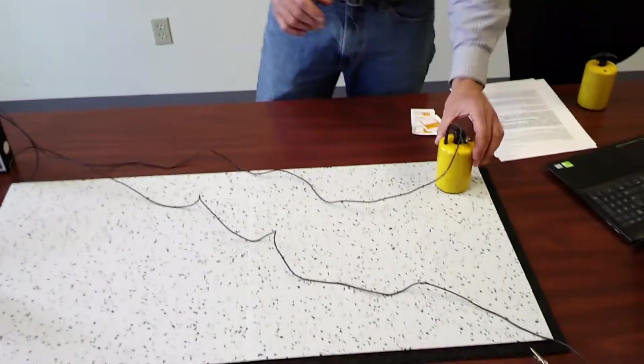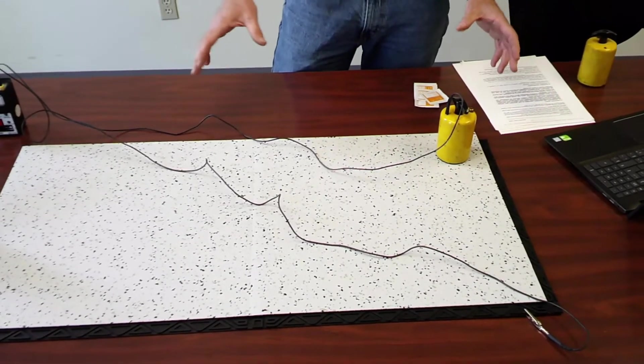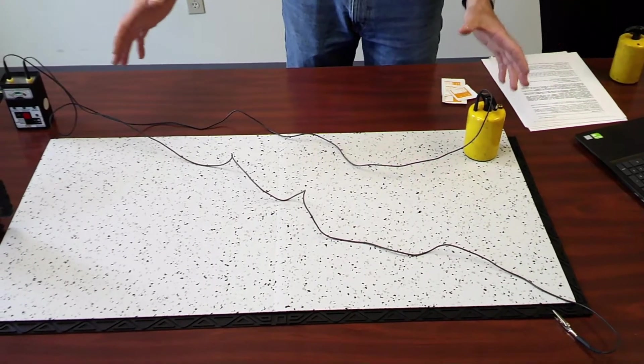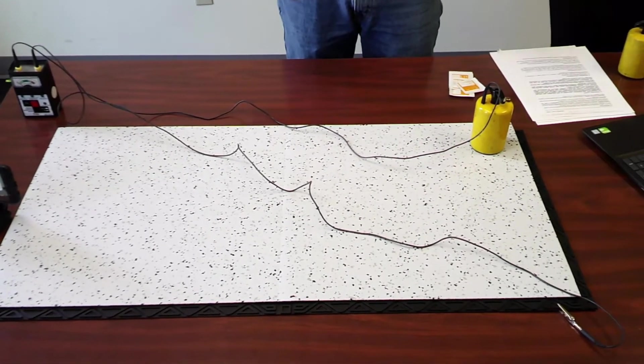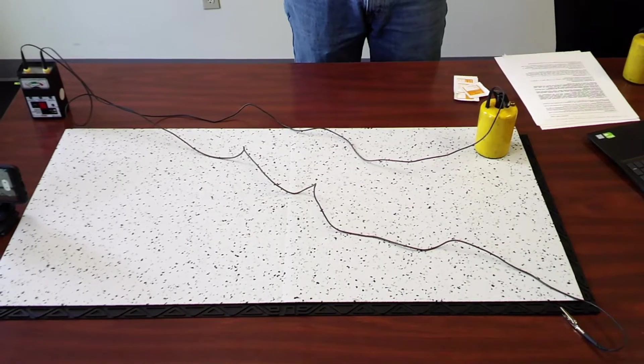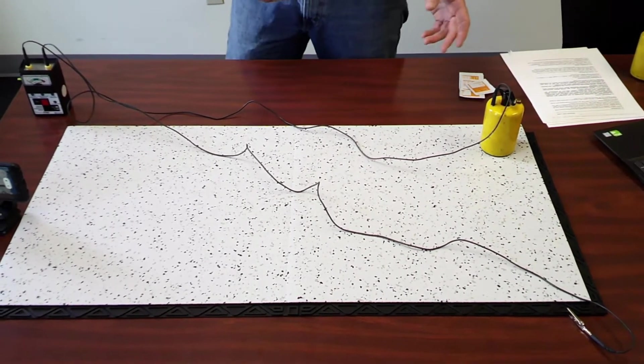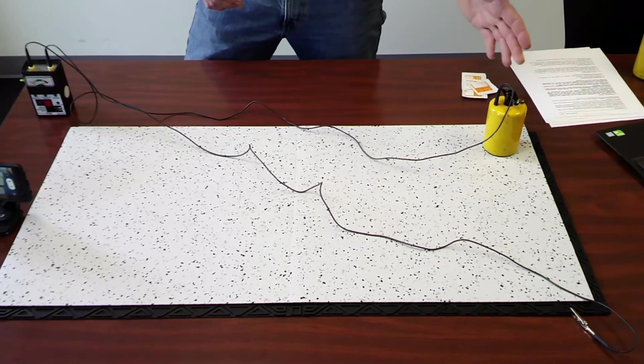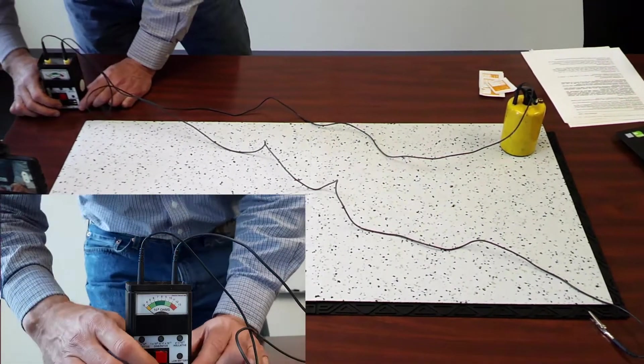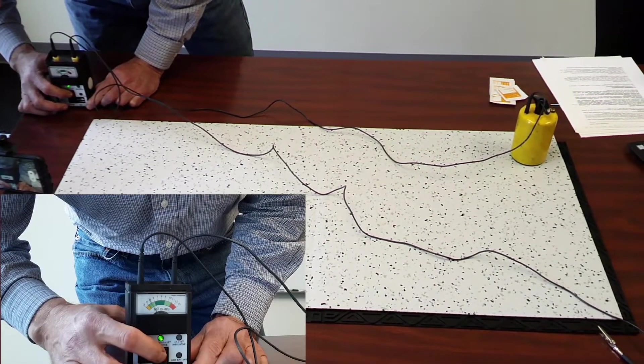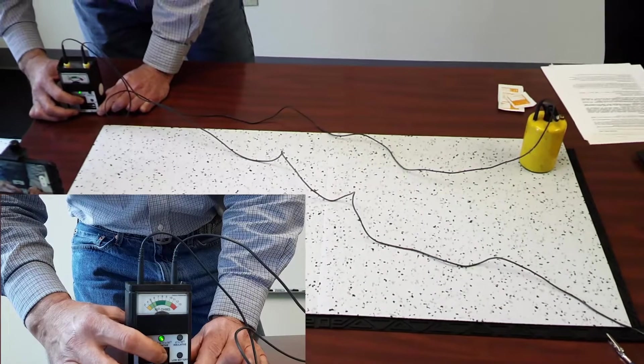I've got the first point set up. Within this test, we're testing one lead to ground, and we test six points on the flooring sample. The sample is supposed to be at least two feet by one foot. This sample is a little bit bigger than that. The standard test method has a pattern where you're supposed to test six spots. I'll just run through them quickly. We have it on the first spot, which is basically the lower left-hand corner. I test the resistance, and I can see that I'm getting under 10 to the fifth ohms.